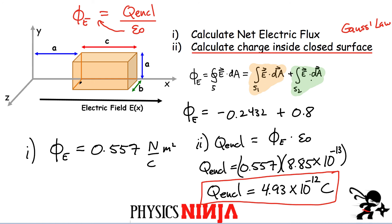That's it for this problem. Notice the key simplification: for many of those surfaces, the flux going through is zero because the area vector and the electric field are perpendicular to each other. We were able to simplify the problem to integrating over only two surfaces of this rectangular prism. Thanks for watching!